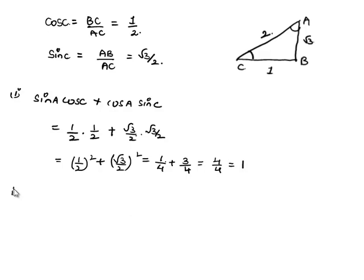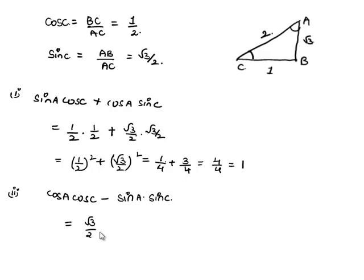Moving on to the second part, we need to find the value of cos A cos C minus sin A sin C. Substituting, cos A is root 3 by 2, cos C is 1 by 2, sin A is 1 by 2, and sin C is root 3 by 2. This gives root 3 by 4 minus root 3 by 4, which is equal to 0.